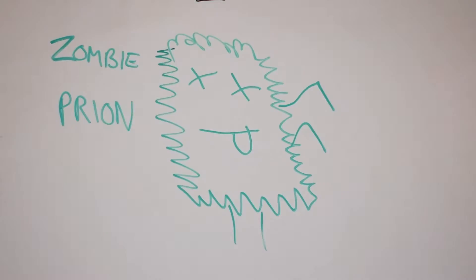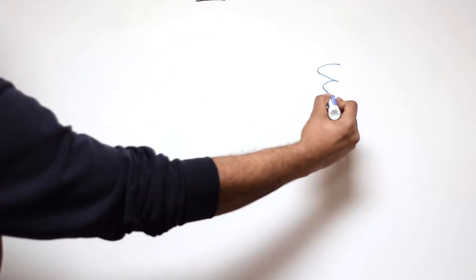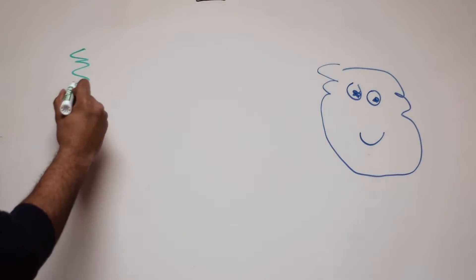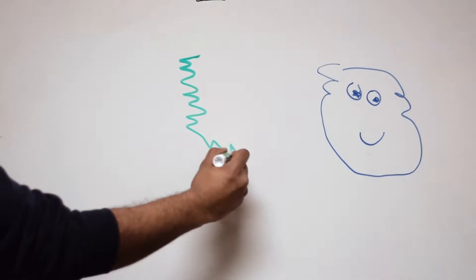A prion, on the other hand, is a misfolded version of the protein that serves no purpose. What makes it dangerous is that it is capable of making the healthy proteins become prions themselves, almost like a zombie.